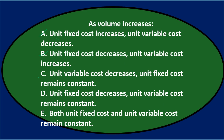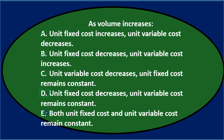Evaluating the options: A is wrong — unit variable costs don't decrease and unit fixed costs don't increase. B is wrong — unit variable costs don't increase, they remain constant per unit. C is wrong — unit variable costs don't decrease and unit fixed costs don't remain constant. D says unit fixed costs decrease (correct) and unit variable costs remain constant (correct). E is wrong. Final answer D.